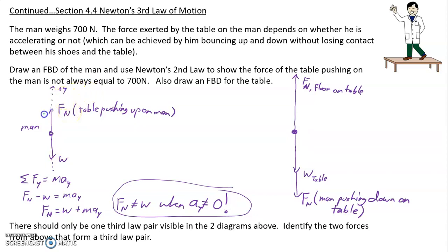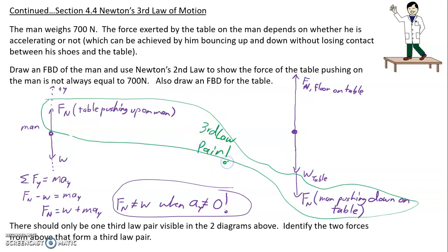However, we talked about this before. This force here and this force down here, those are a third law pair. The table pushes up on the man and the man pushes down on the table. These are a third law pair.